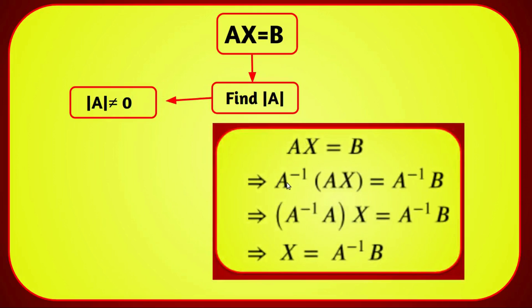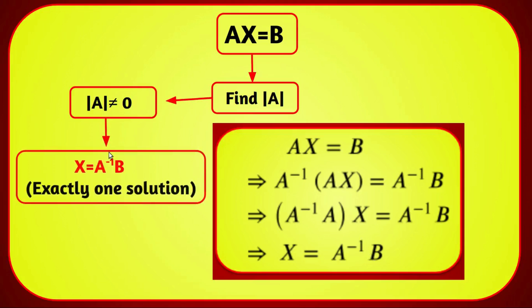Since A inverse exists, multiply both sides of AX = B by A inverse: A⁻¹AX = A⁻¹B. Since A⁻¹A is the identity matrix, we get X = A⁻¹B. Therefore, when the determinant of A is not equal to 0, the system has exactly one solution, given by X = A⁻¹B.